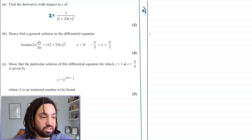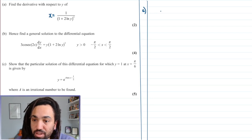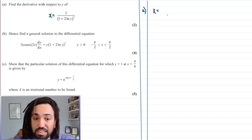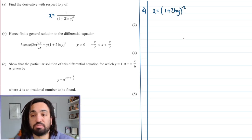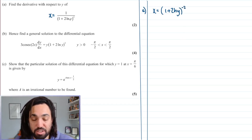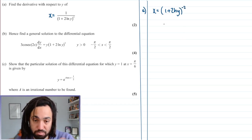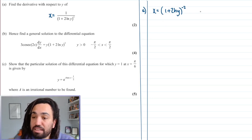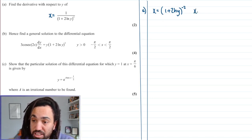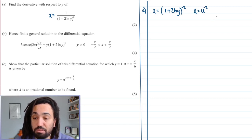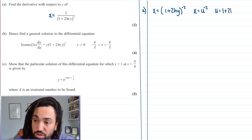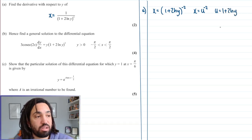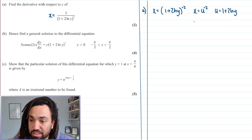I'll put question A there. We'll get started with differentiating this with respect to Y. So in order to do this, I'm going to set it equal to X. I want to do X is equal to, I'm going to write it as a bracket, so 1 plus 2 ln Y to the negative 2, because this bracket here is on the denominator, so we can use a negative power to bring it up to the top.